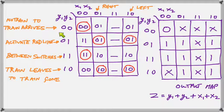Now to help you understand I have identified the four states. No train until train arrives, activate the red light, train is between the switches red light must remain activated, finally train leaves the last switch and returns to no train or train gone.